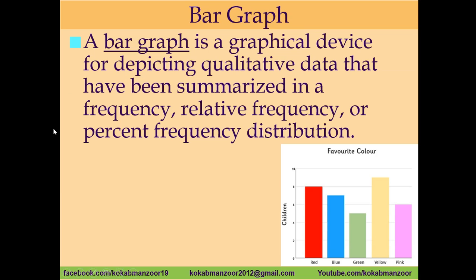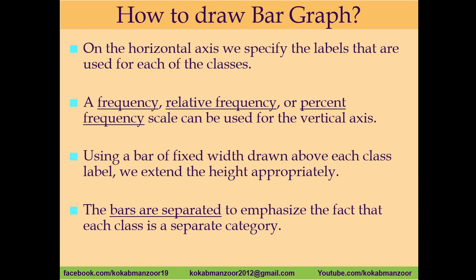In the previous lecture we learned about frequency, relative frequency, and percent frequency distributions. When we have data in any of these formats, we can convert it into bar graphs. On the horizontal axis we measure the class labels, and on the vertical axis we place frequency, relative frequency, or percent frequency. Then we draw the bars according to the height of the values in the frequency distribution.